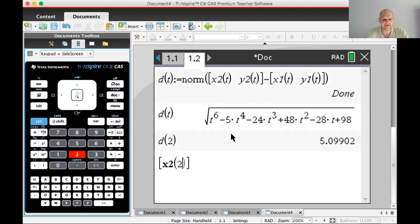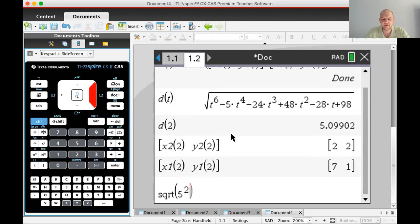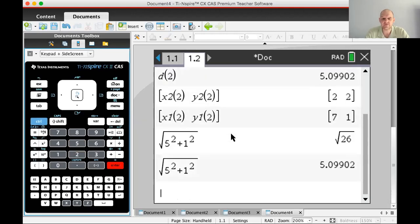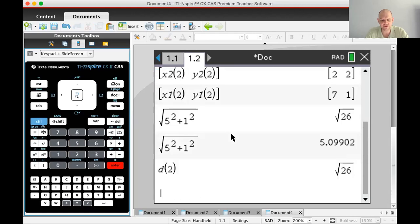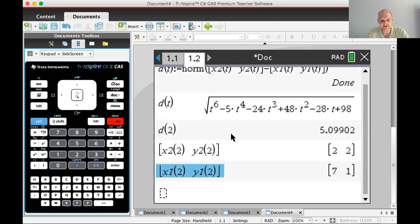Here is the distance when t equals 2. Let me verify: the square root of (x - x is 5)² plus (y - y is 1)² gives the same value. That's the distance.